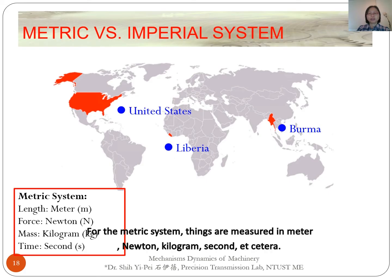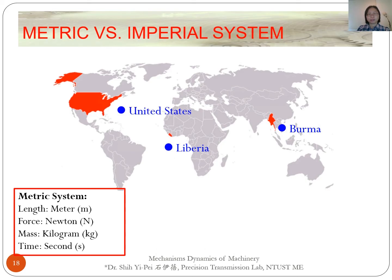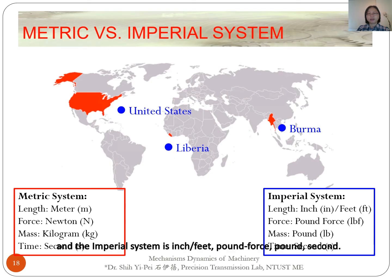For the metric system, things are measured in meters, Newtons, kilograms, seconds, etc. And the imperial system uses inches, feet, pound-force, and pound-seconds.